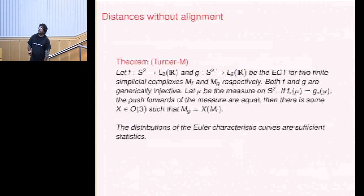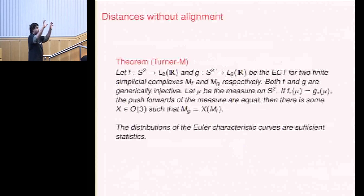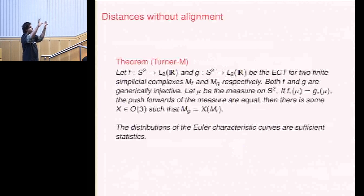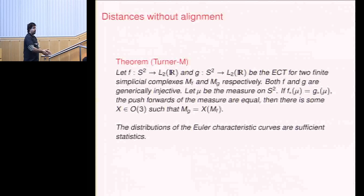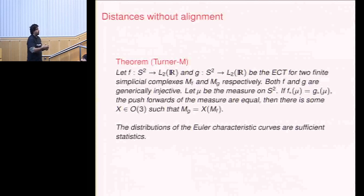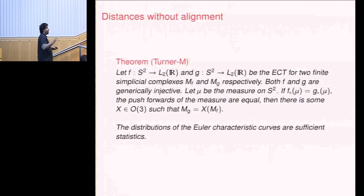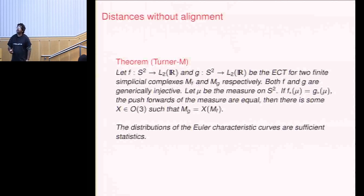If you collect a distribution of curves for one object and a distribution of curves for another object, and you can measure the distance between these distributions, you have a system for reasoning about distances without alignment. It may be better to align them, but aligning these objects is non-trivial. We have papers and software to do that as well.